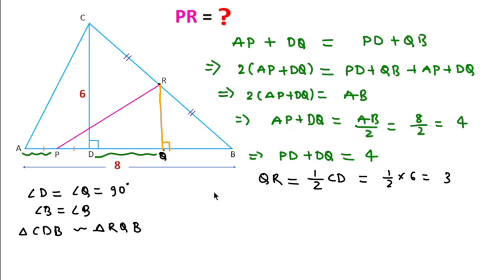Now in triangle PQR, we can apply the Pythagorean theorem. PR equals the square root of PQ² + QR². PQ equals PD + DQ, which is 4.